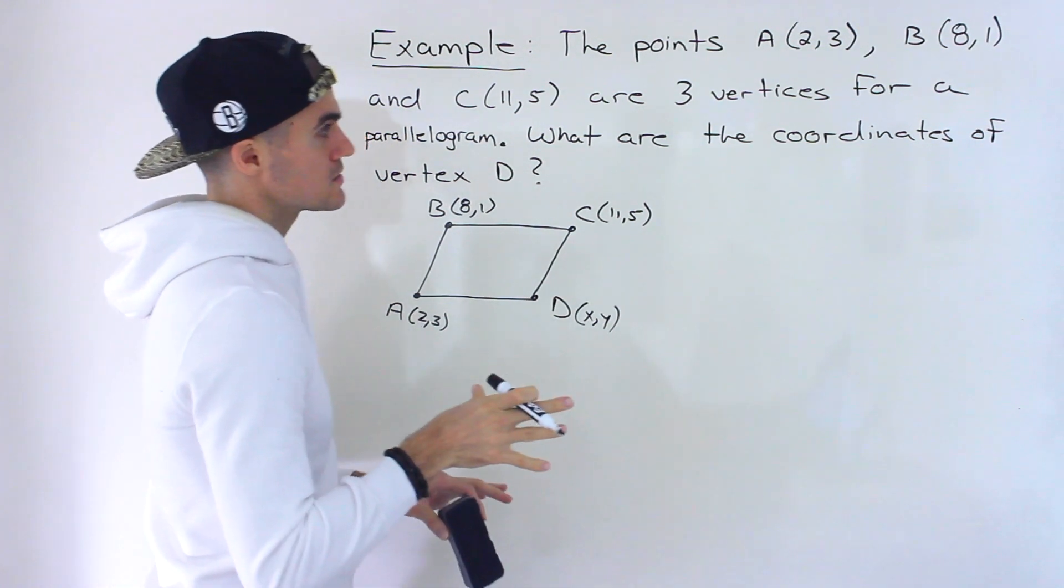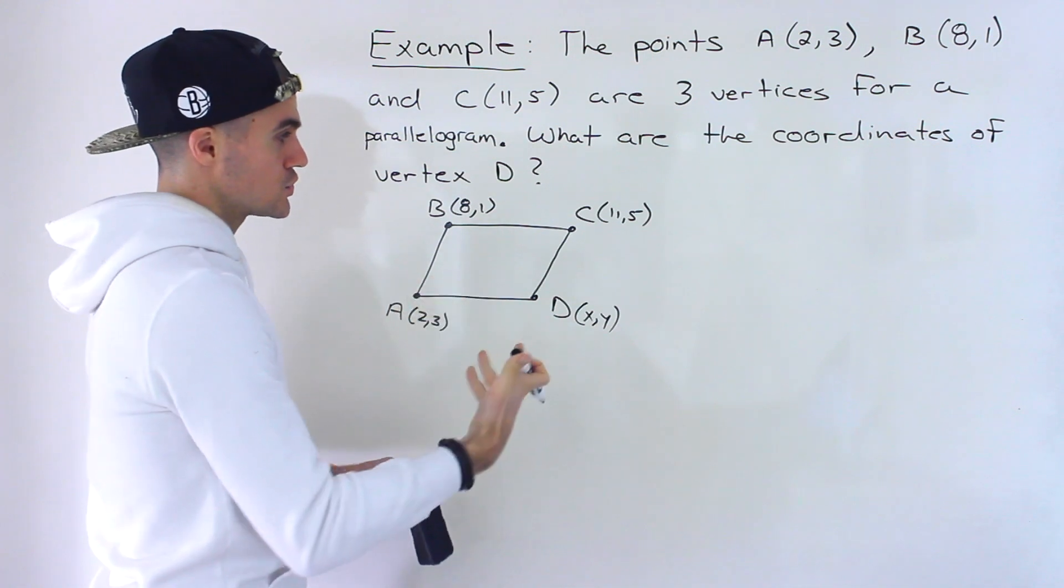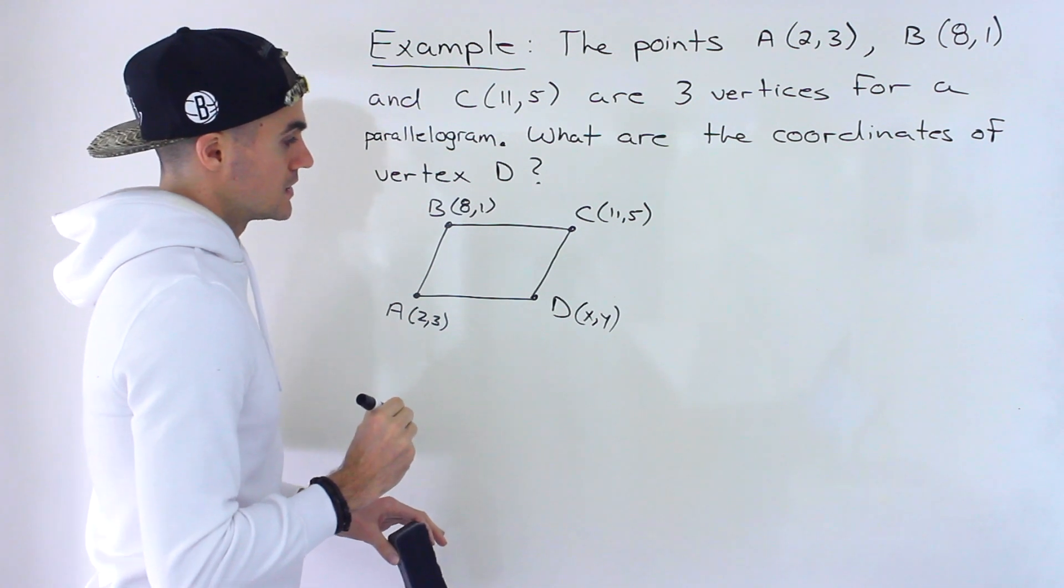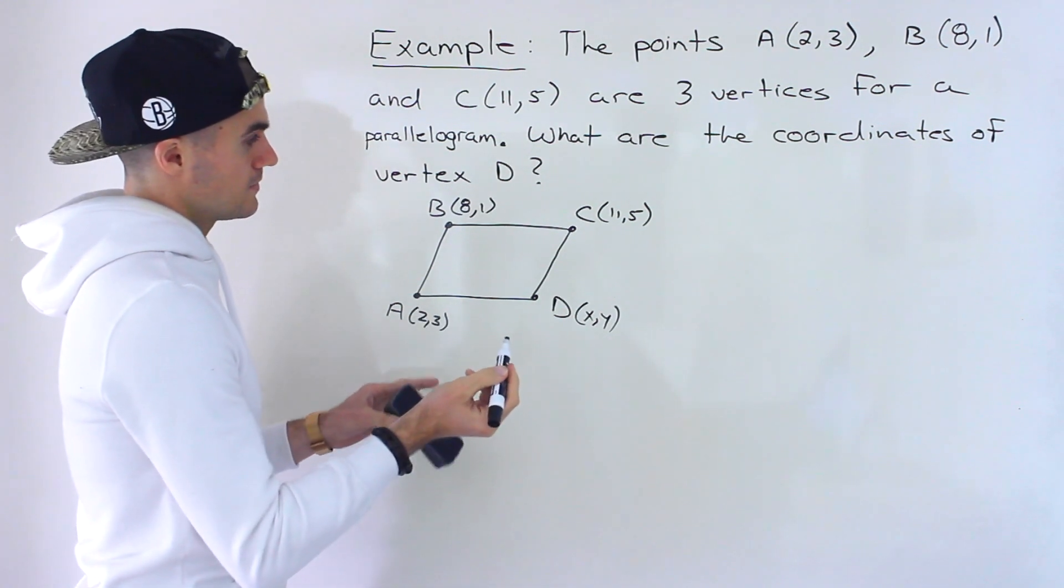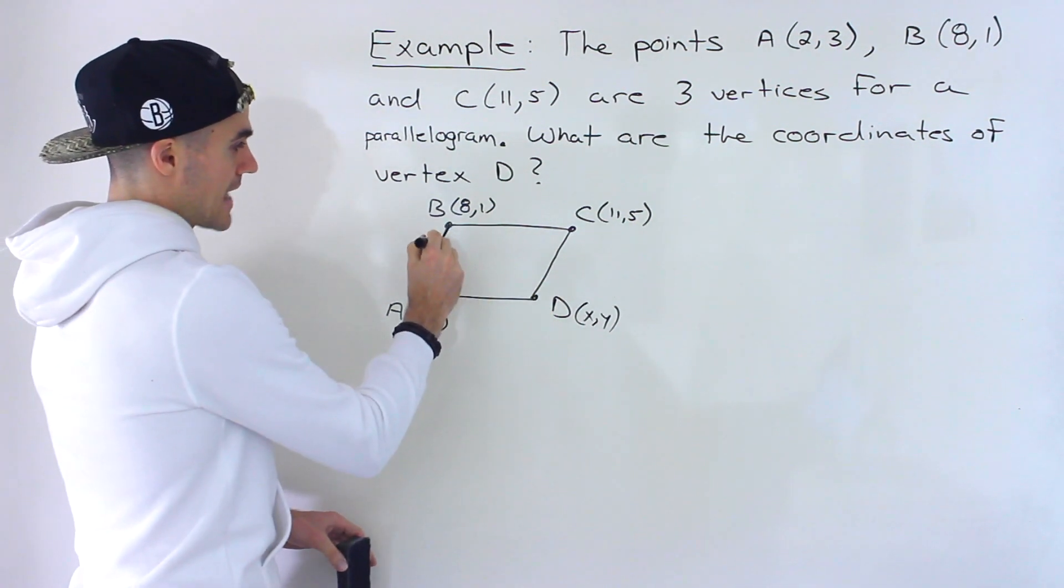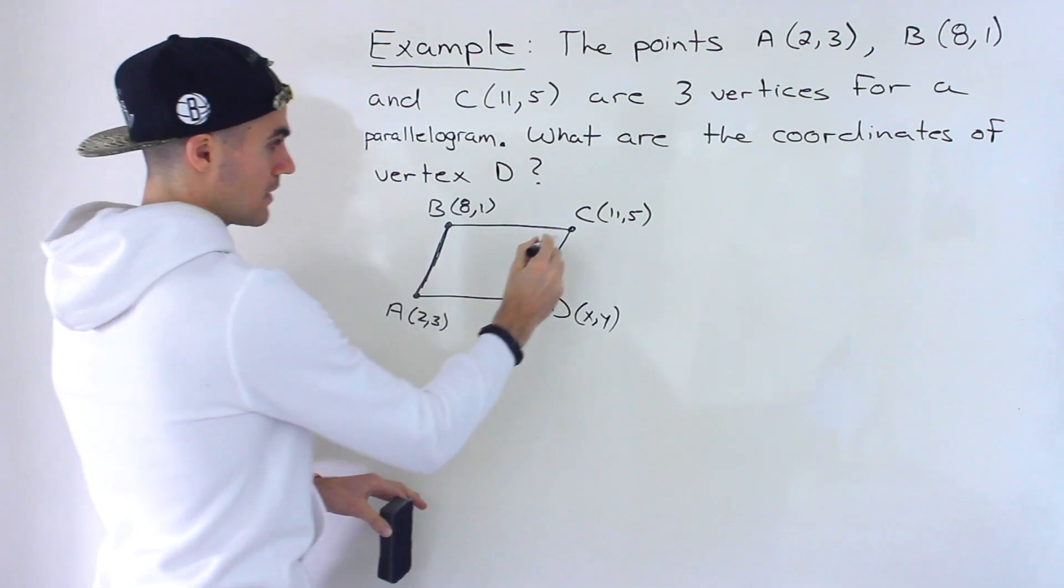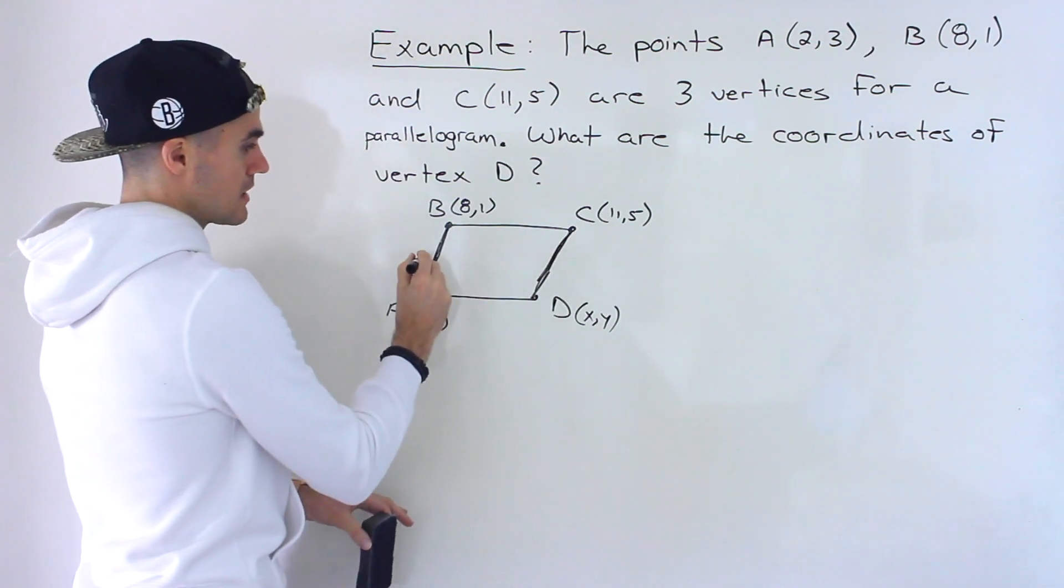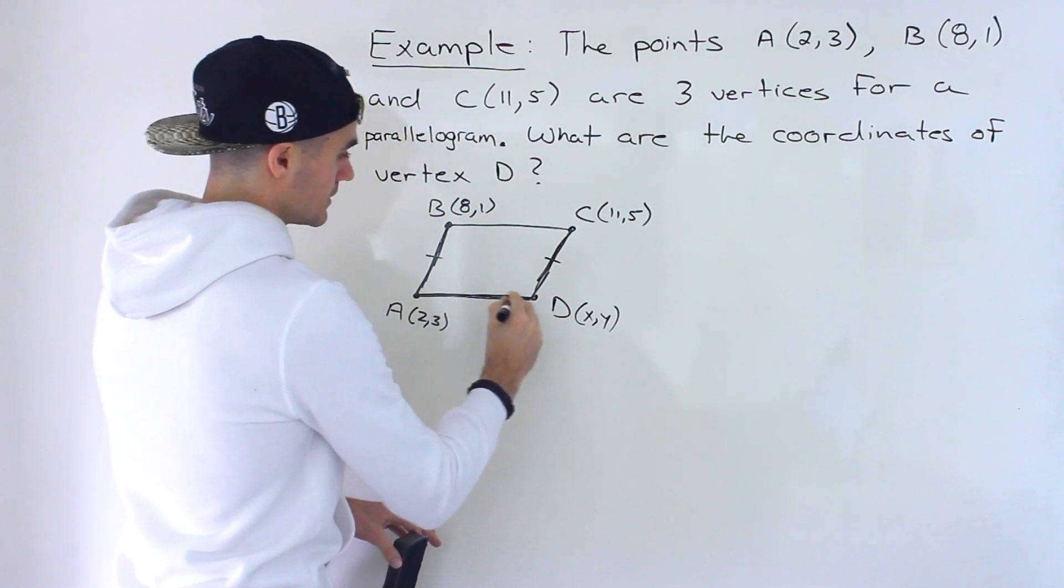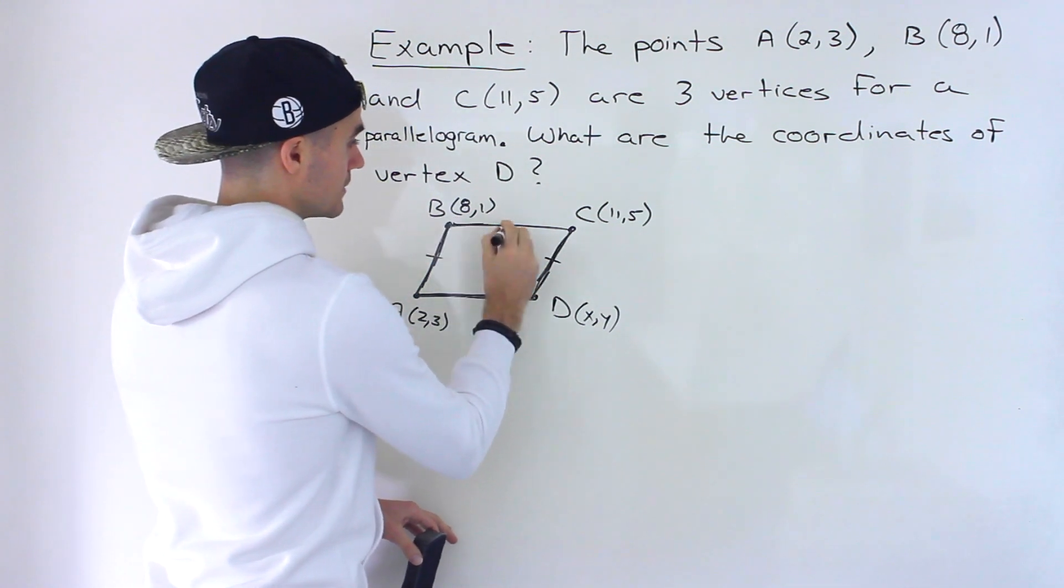There's actually multiple ways to do this. The way that I'm going to show you is my preferred way. But whichever way you're doing it, whichever way your teacher shows you, just make sure that you're getting the same solution that I'm going to get at the end. So with a parallelogram, if you remember, what that means, the property of it, is that the opposite sides are parallel. So that means this side is parallel to this side. Side AB is parallel to side CD. And then side AD is parallel to side BC.